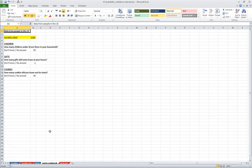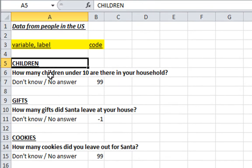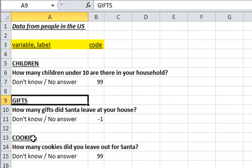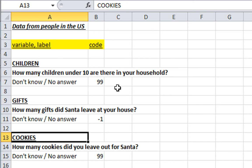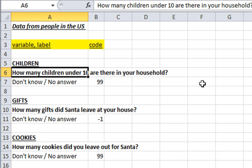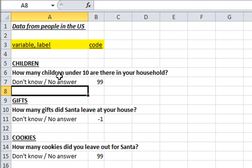Let's look at the variables here. There's three different variables: children, gifts, and cookies. Each variable we can go through. How many children under 10 are there in your household? This is going to be a numeric answer and it's indicating here what the missing data values are. If there's a 99 that is missing data.